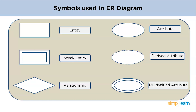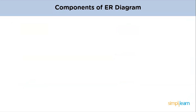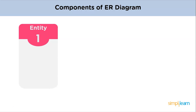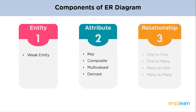There are three main components of ER Diagrams: entity, attribute, and relationship. Entities have a subtype: weak entity. Attributes are further classified into key attribute, composite attribute, multi-valued attribute, and derived attribute. Relationships are classified into one-to-one, one-to-many, many-to-one, and many-to-many relationships.